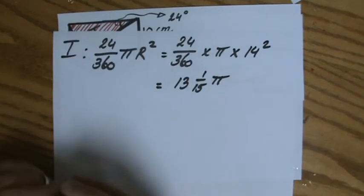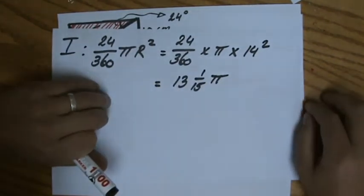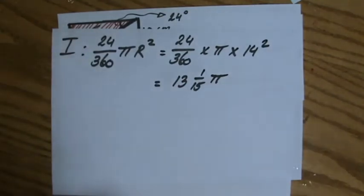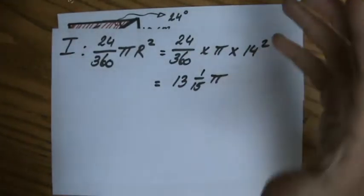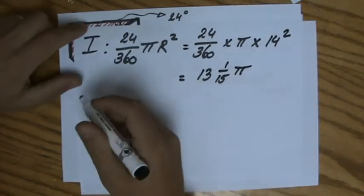If I work it out on my calculator, I'm going to get 13 1/15 of π. I'm leaving it in terms of π. You can multiply by π if you want, but then you have to write down all the decimals because you cannot round in the middle of your calculations. I will do that at the end of my workings.